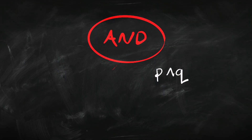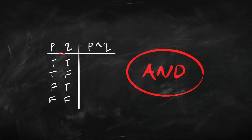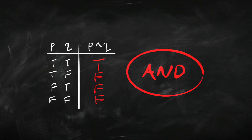Let's look at the truth table for and. Think about what and means — it basically means that both P and Q are true. So its truth table is going to look like this: when P and Q are both true, the whole sentence P-and-Q is going to be true. But when one or the other is false, P-and-Q is going to be false. And when they're both false, P-and-Q is going to be false. So the truth table for and goes: true, false, false, false.